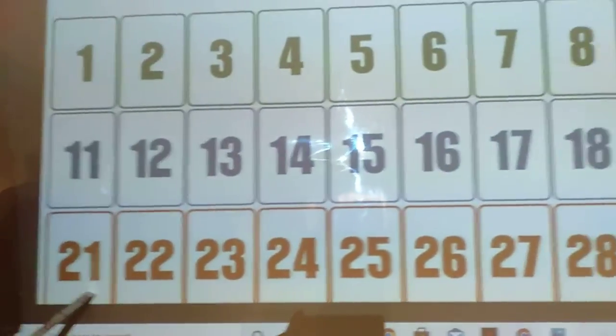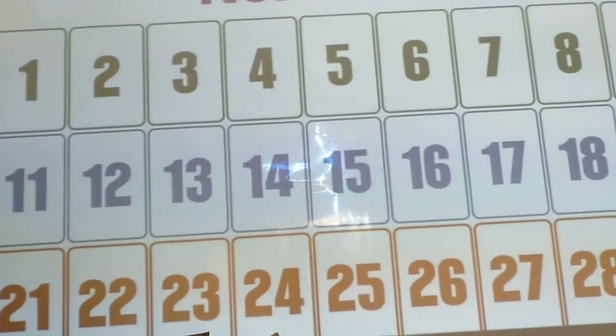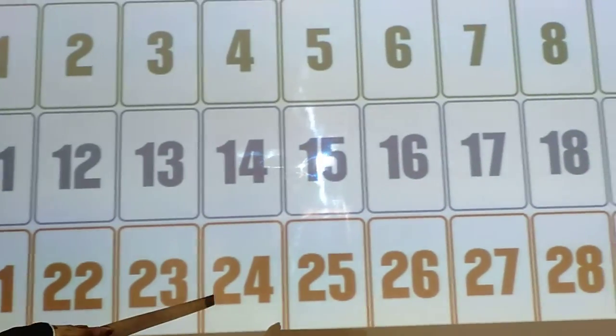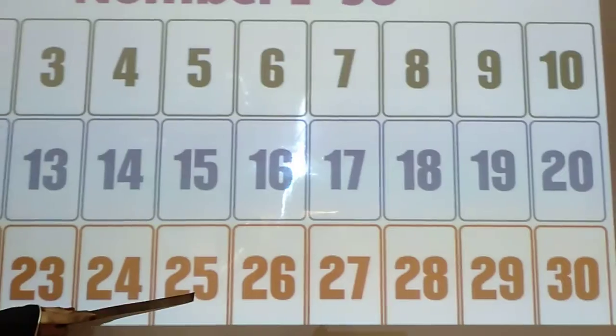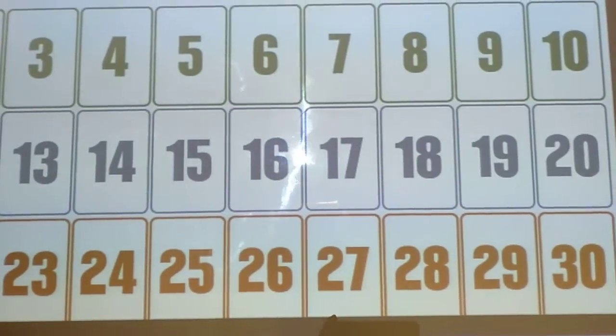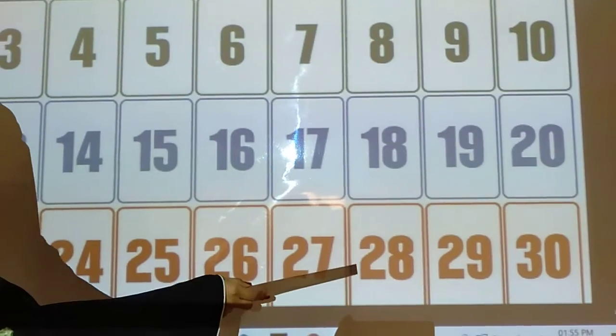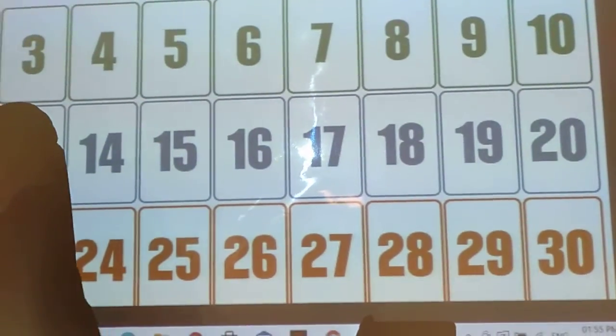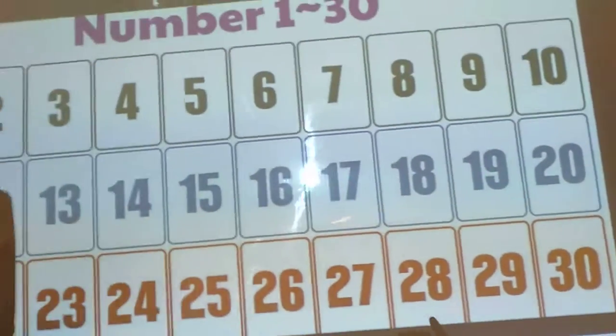2, 1, 21. 2, 2, 22. 2, 3, 23. 2, 4, 24. 2, 5, 25. 2, 6, 26. 2, 7, 27. 2, 8, 28. 2, 9, 29. And last number, 3, 0, 30.